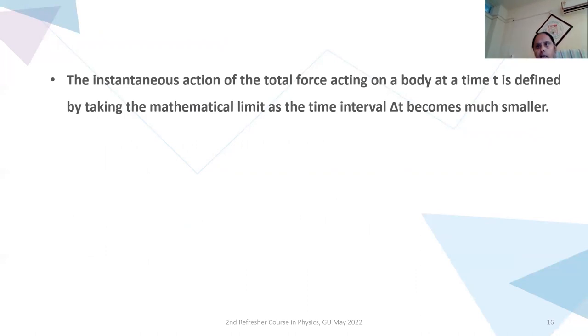So the continuous action of the total force acting on a body at a time t is defined by taking the limit, mathematical limit as the time interval delta t becomes very small. Now we have force F. We have two bodies with masses M1 and M2. So force is applied on it. Momentum will be generated. So M1 A1 and M2 A2. A1 and A2 are the accelerations. This gives me ratio of the mass of the bodies to be equal to ratio of the accelerations. That is, M1 by M2 is equal to A2 by A1.